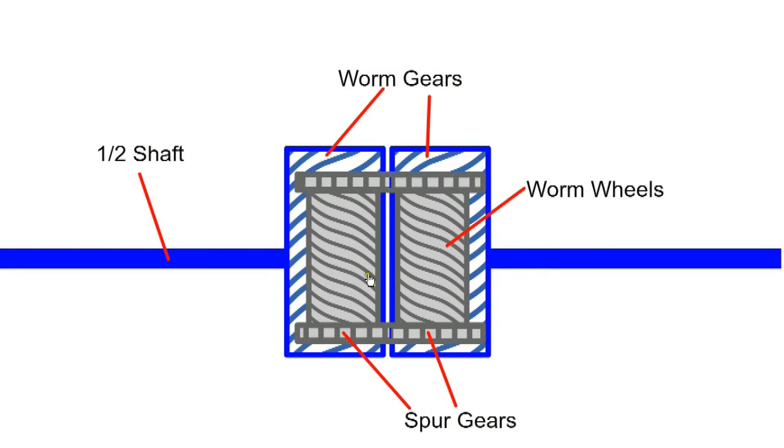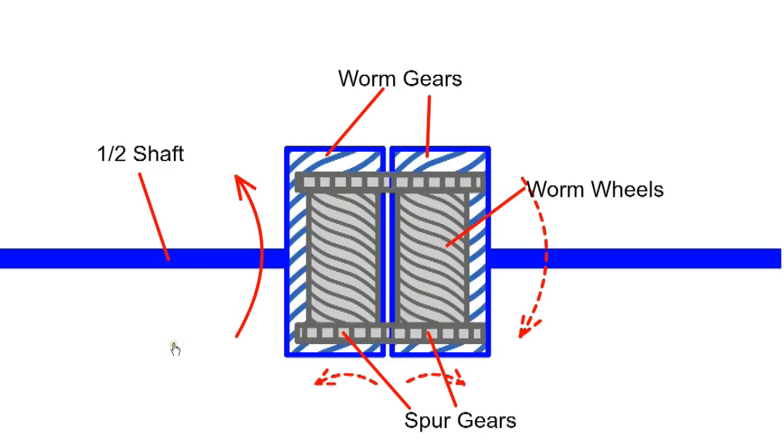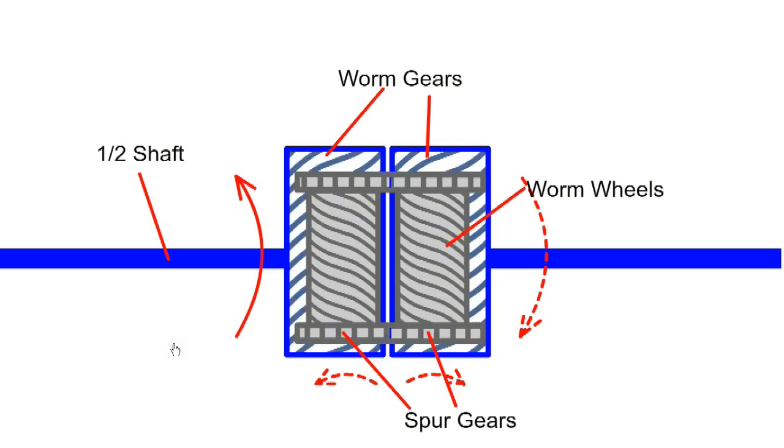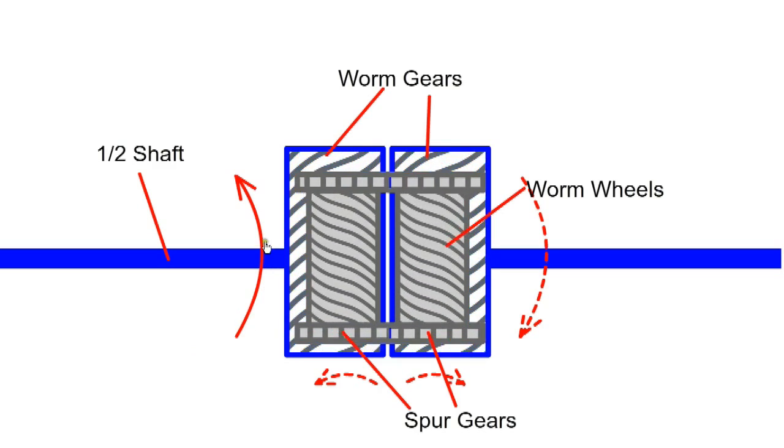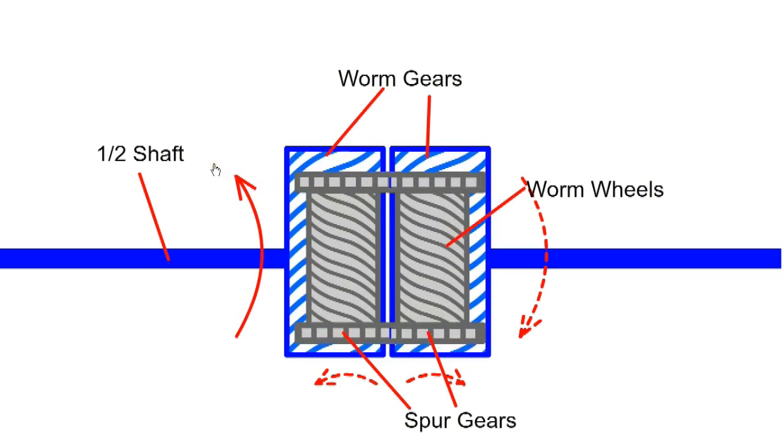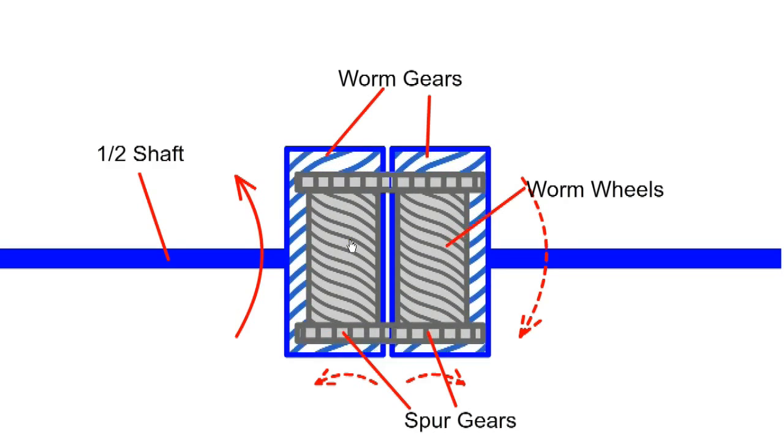To demonstrate the operation of the torsen diff, we'll keep the cage stationary and rotate one of the wheels. Effectively jacking up the car and rotating one wheel forward and the other wheel backwards. If the left wheel is rotated in this direction, it will drive the worm.